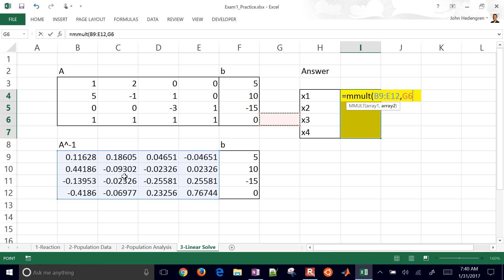So we're going to multiply two matrices together. The first one is going to be this A inverse. Okay, comma, and then we're going to do the B vector as well. And hit control, shift, enter. Okay, so that gives us our answer for the linear solve.